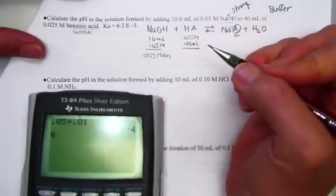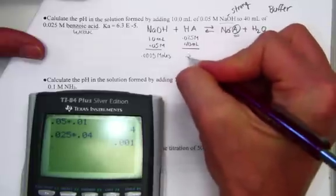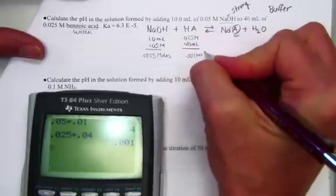5 times 10 to the negative 4th, or 0.0005 moles. We'll do the same strategy for the acid. 0.025 molar times the volume in a liter, 0.04, and that is 0.001 moles of acid.